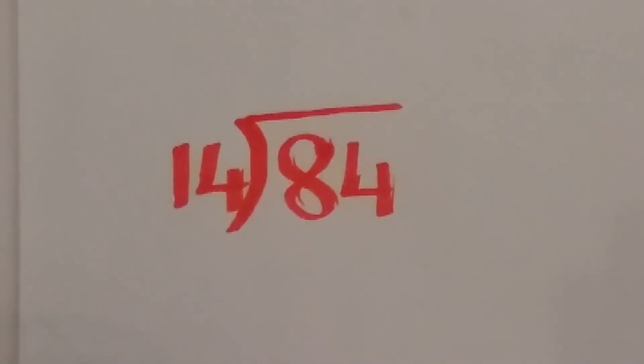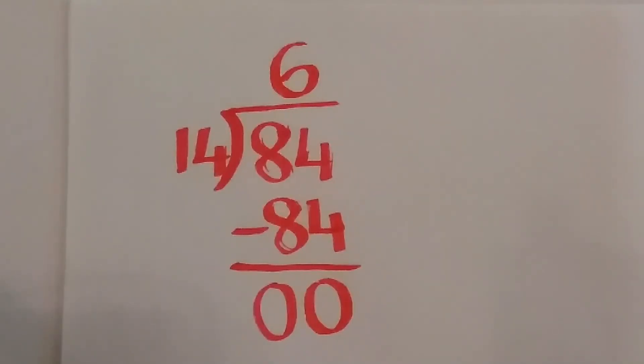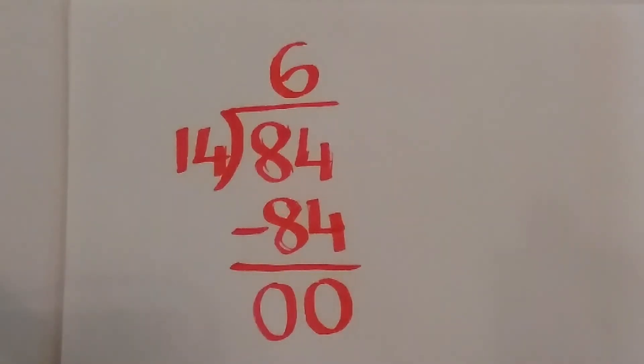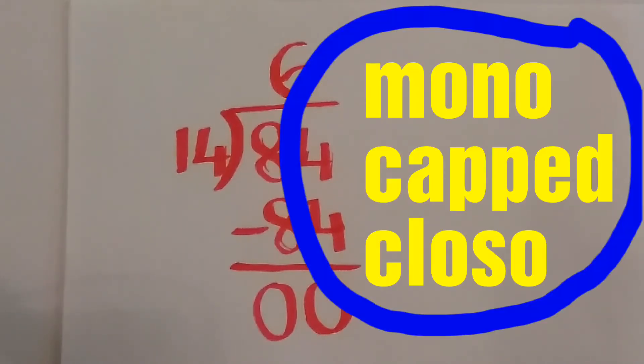The total valence electron is to be divided by 14. 14 times 6 is 84, and the remainder that we get is 0. Since the remainder is 0, the structure is mono-capped closo.